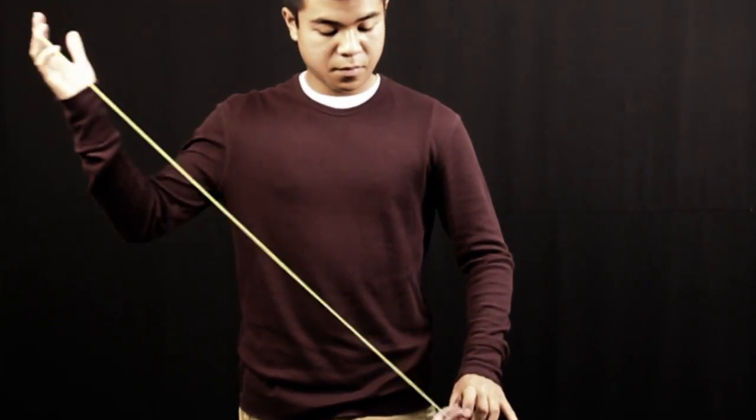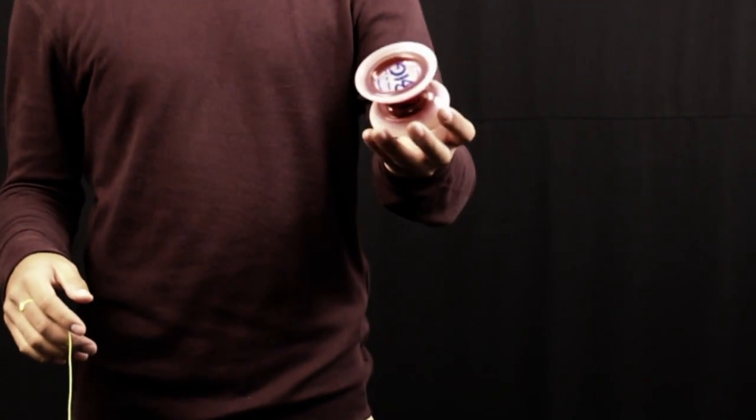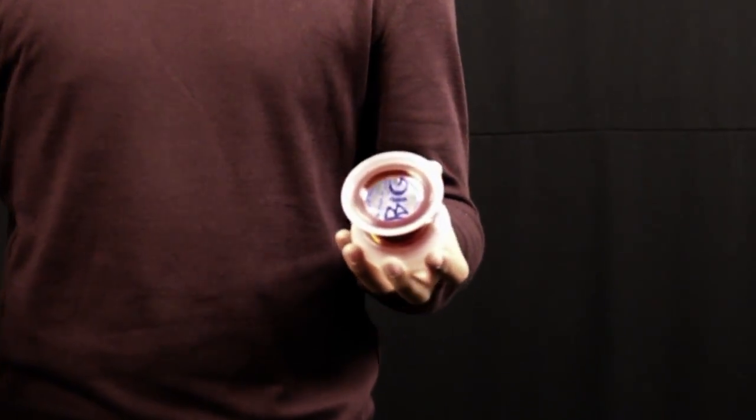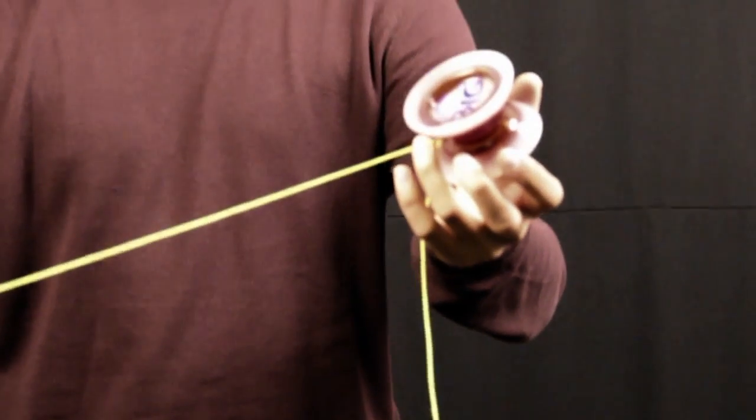To break it down, what you're going to do is you're going to hold the yoyo with your non-throwing hand and you're going to take the string and put it around the yoyo.